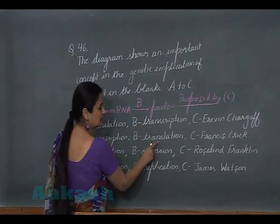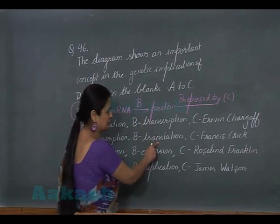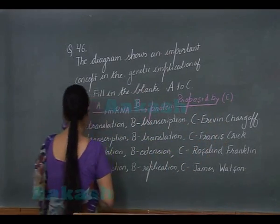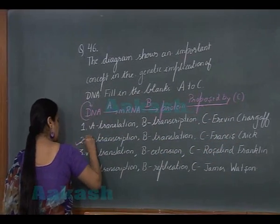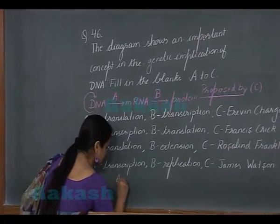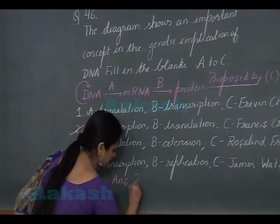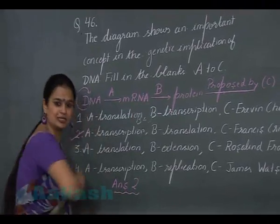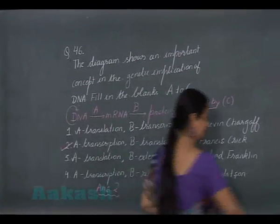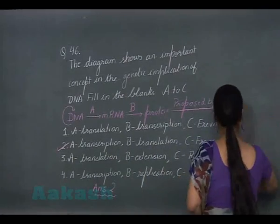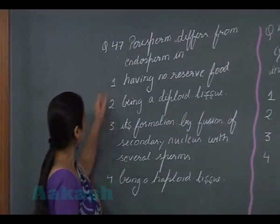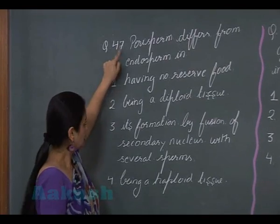So A represents transcription, B is translation, and C was proposed by Francis Crick. The answer for question number 46 is option 2.